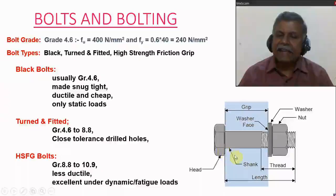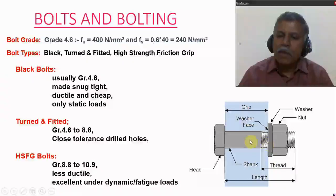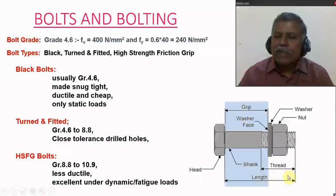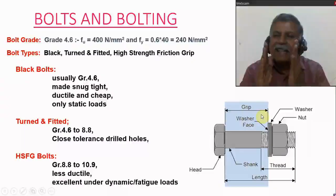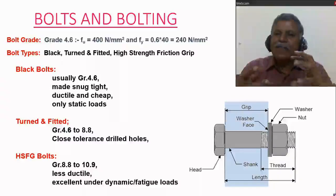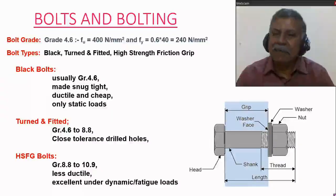This figure shows the bolt assembly, which consists of the bolt, nut, and washer. The bolt has a head, a shank or body, and a threaded portion. Sometimes bolts may be fully threaded and sometimes only partly threaded. The washer and nut are also part of the assembly. The length of the bolt is indicated here. The total thickness of the plates connected by the bolts is called the grip length.